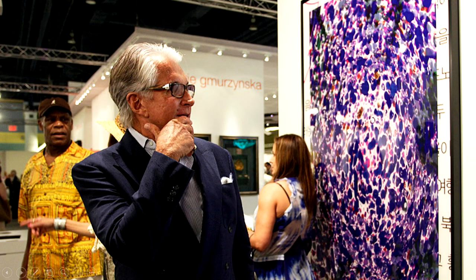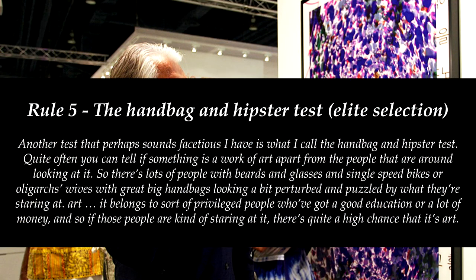Rule number five: the handbag and hipster test. Another test that perhaps sounds facetious is one Grayson calls the handbag and hipster test. Quite often you can tell if something is a work of art from the people looking around at it — lots of people with beards and glasses and single-speed bikes, or an oligarch's wife with great big handbags, looking a bit perturbed and puzzled at what they're staring at.